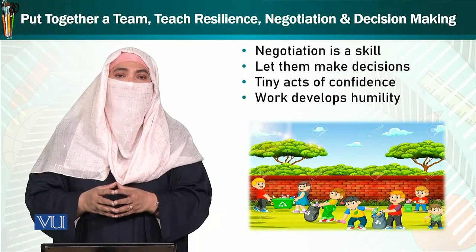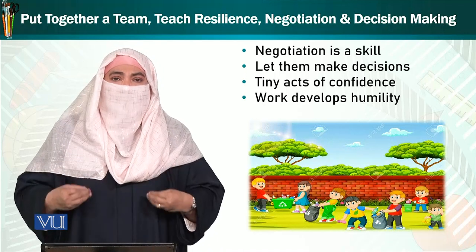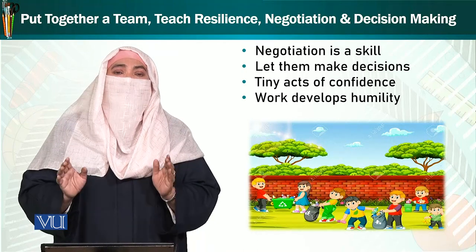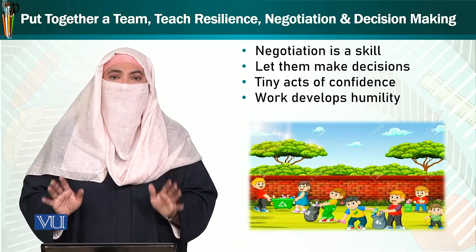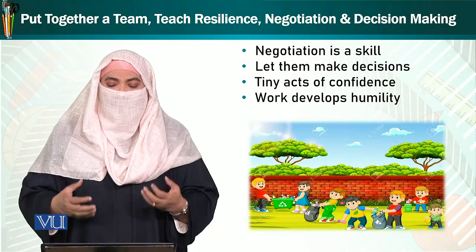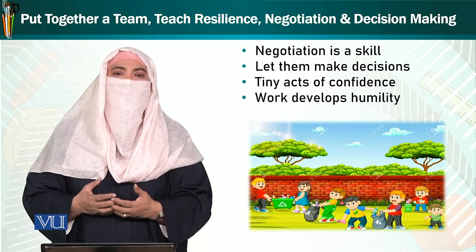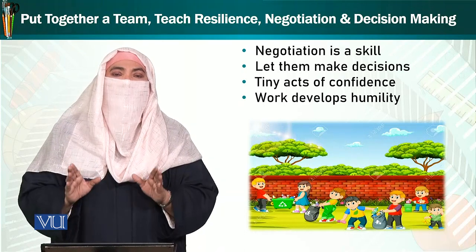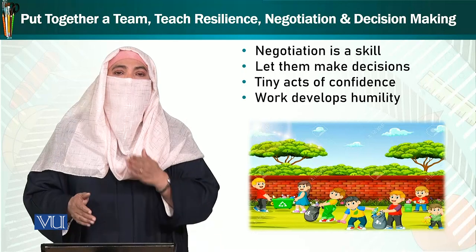ہم شروع میں manners کے نام پے بچوں کو بہت سی چیزیں روکتے ہیں۔ مثلاً وہ کھانا خود کھانا چاہتا ہے تو ہم سمجھتے ہیں کہ وہ کپڑوں پے گرا لے گا، کپڑے گندے کر لے گا۔ ہونا یہ چاہیے کہ اسے کوئی apron دیں، کوئی حفاظتی انتظام کریں، اور پھر اسے کہیں کہ وہ اپنا کھانا خود کھائے — تو اس کے اندر autonomy پیدا ہوگی۔